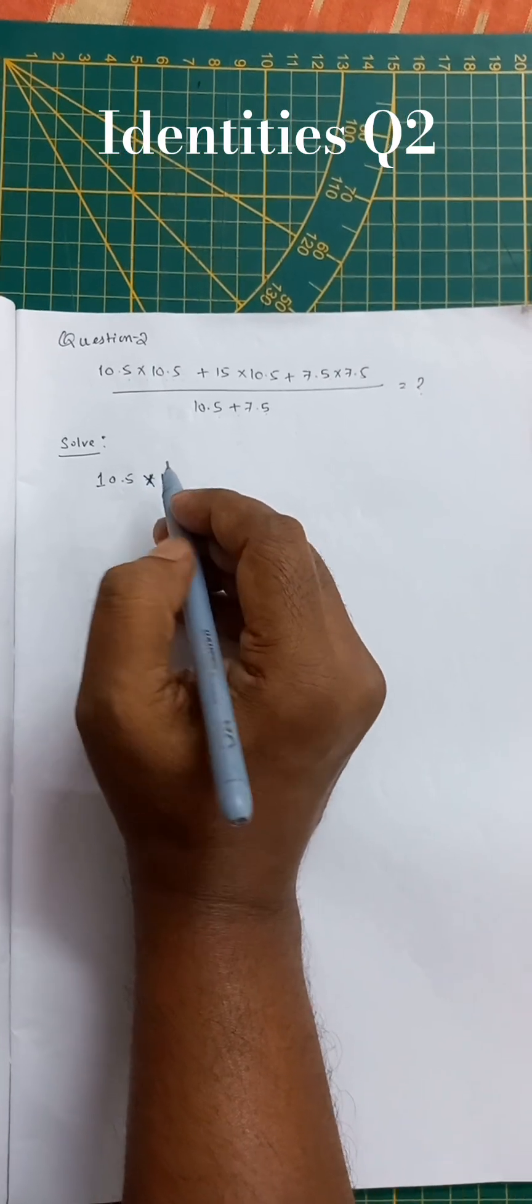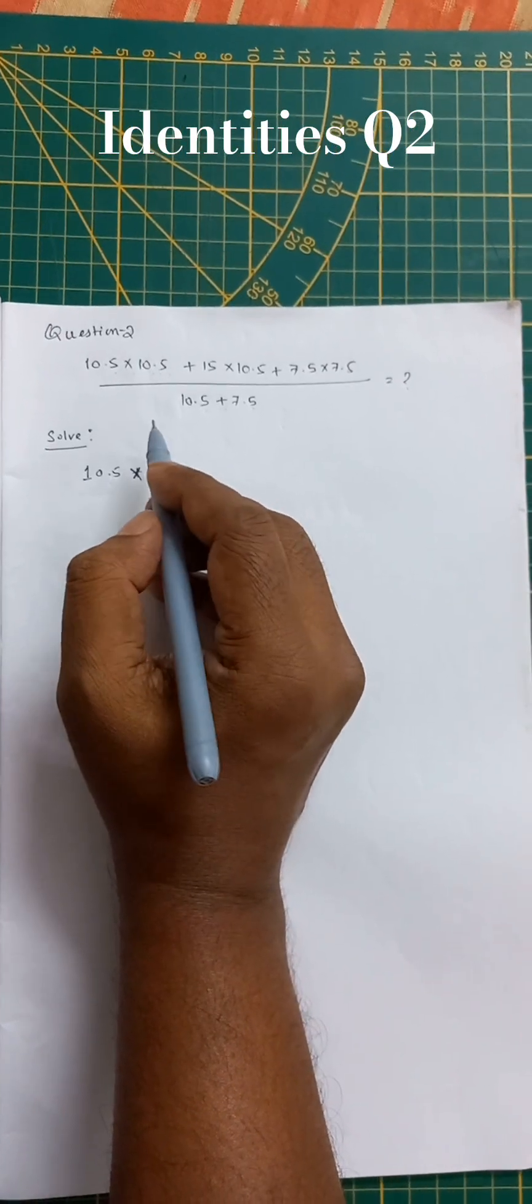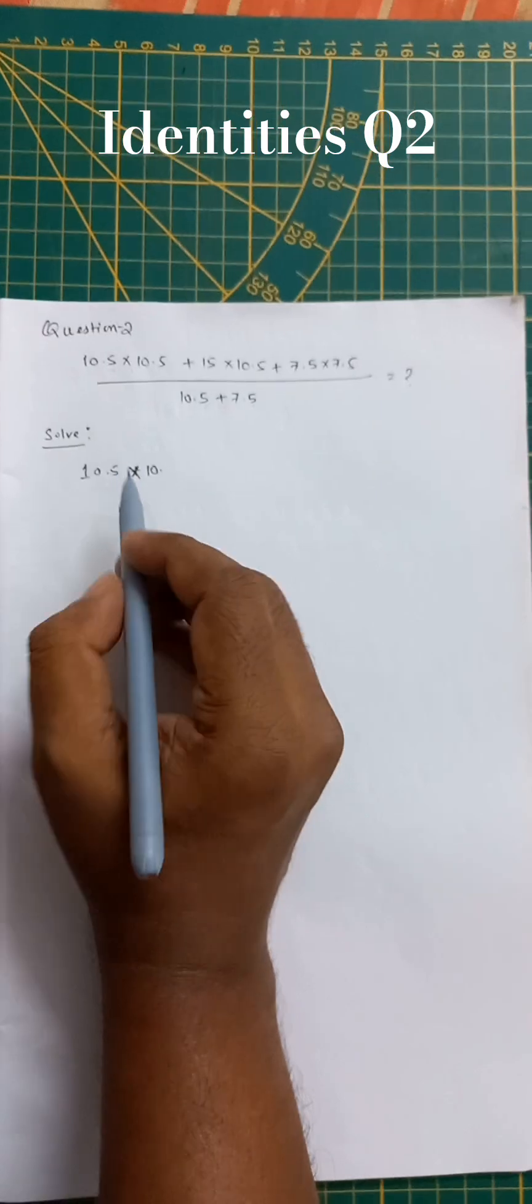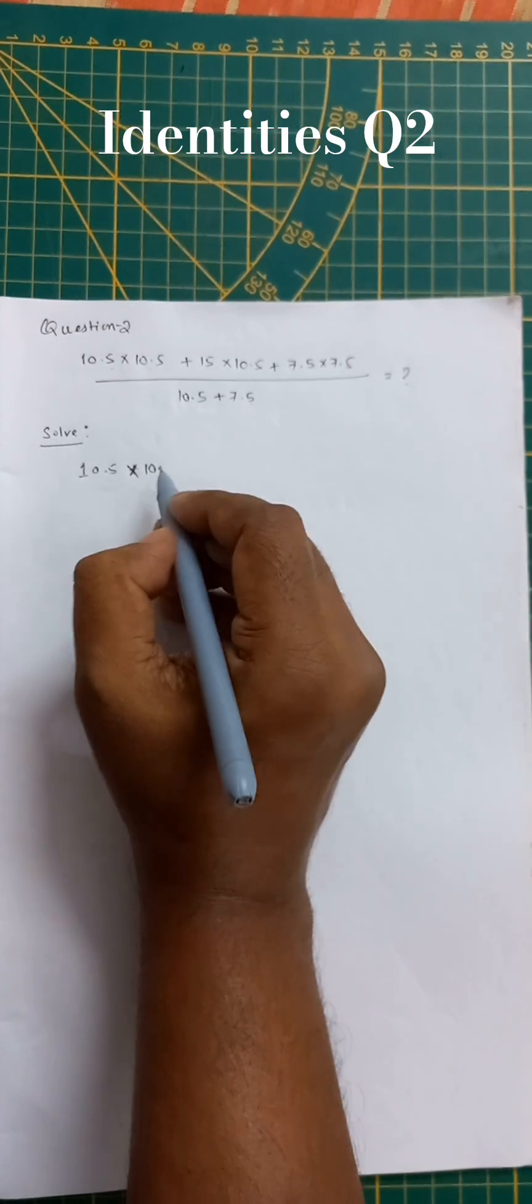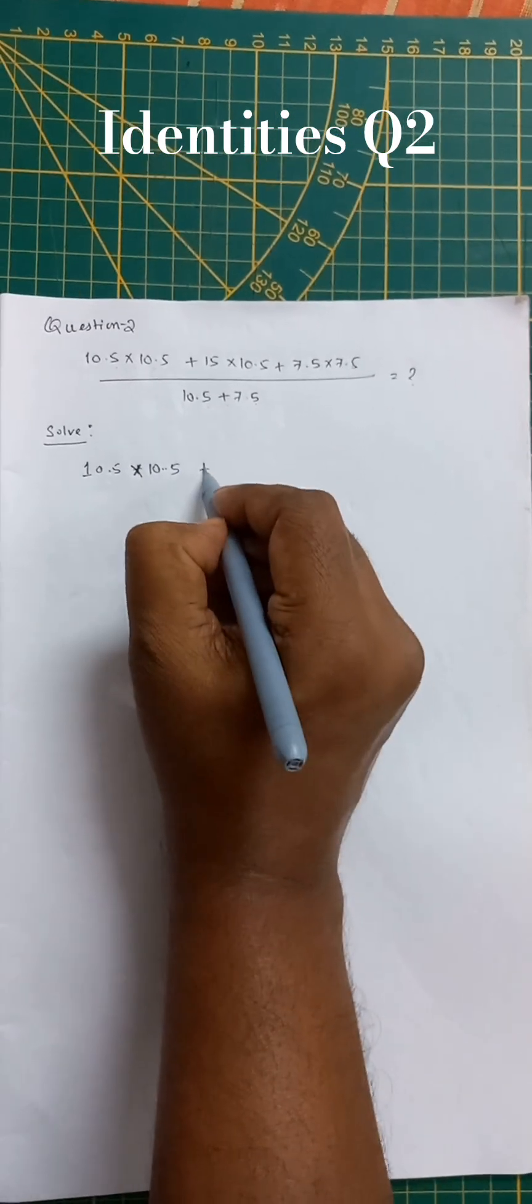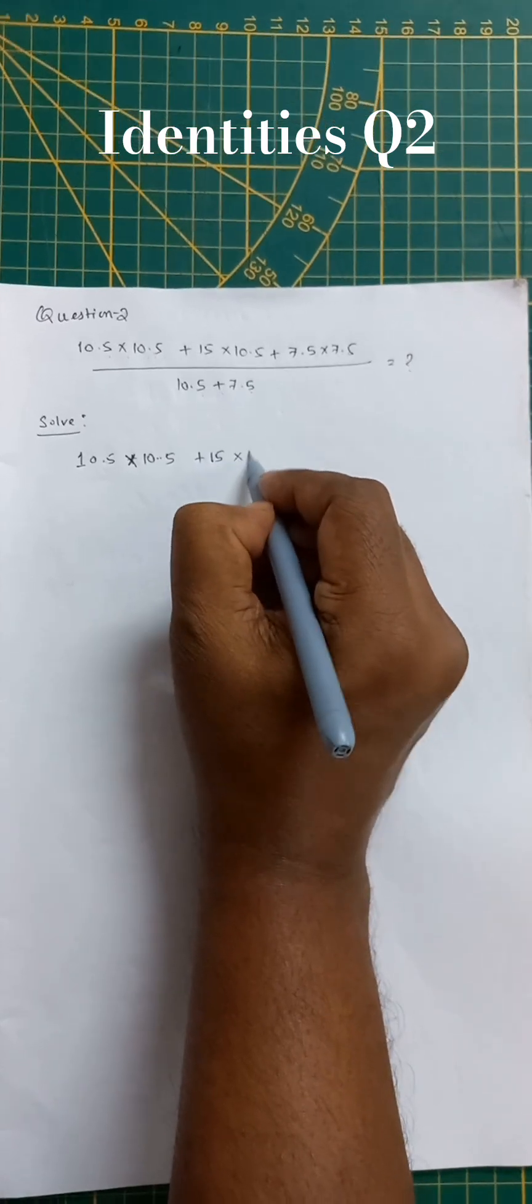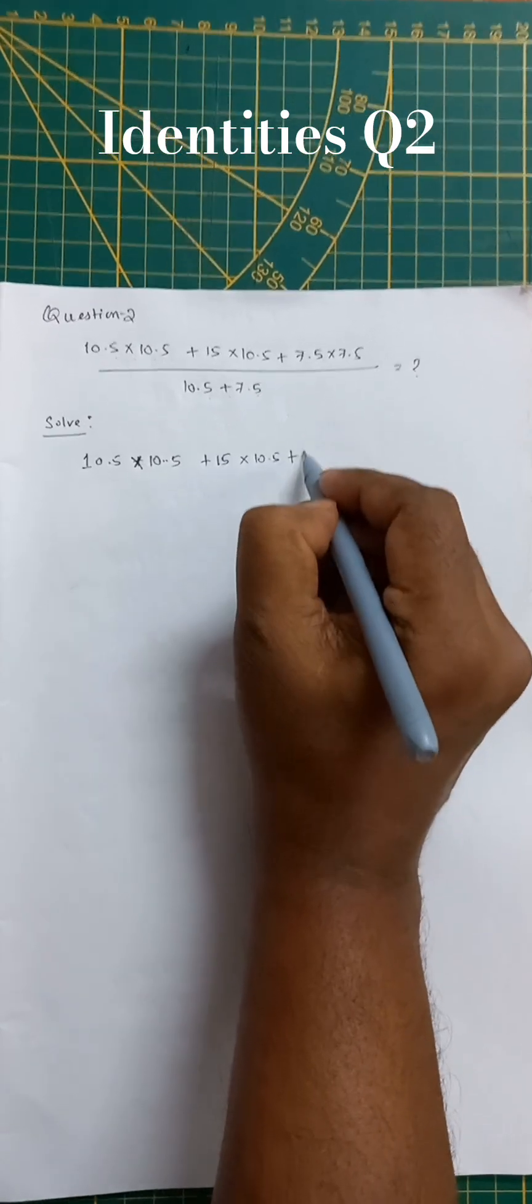Hello everyone, let's solve one more question from identities. That is 10.5 into 10.5 plus 15 into 10.5 plus 7.5 into 7.5, divided by 10.5 plus 7.5.